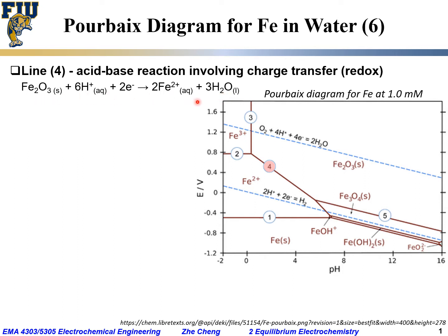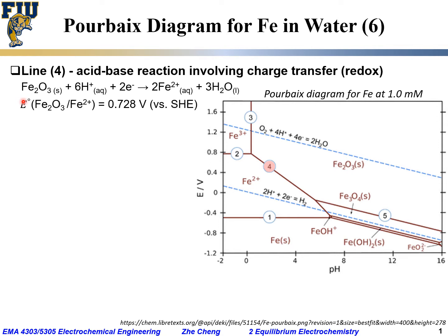This would be the half-cell reaction. Let's check the balance: 2 iron on the left, 2 iron on the right; 6 protons on the left, 6 hydrogen on the right; 3 oxygen on the left, 3 oxygen on the right. For charge: 6 plus 2 minus gives 4 plus on the left, and 2 times 2 plus gives 4 plus on the right. So this half-cell reaction is balanced in terms of both mass and charge.